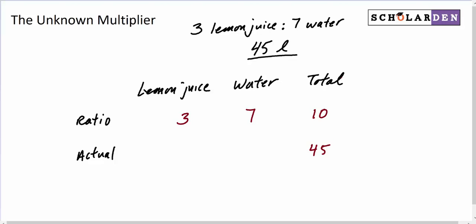Now we need to know the unknown multiplier. What did 10 get multiplied by to get 45? Well, to do that, we can just say what's 45 divided by 10? Well, that's equal to 4.5. So the unknown multiplier is 4.5.